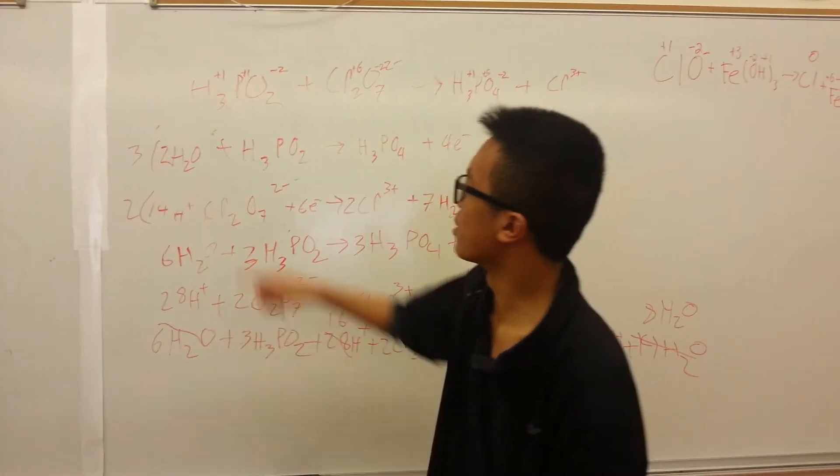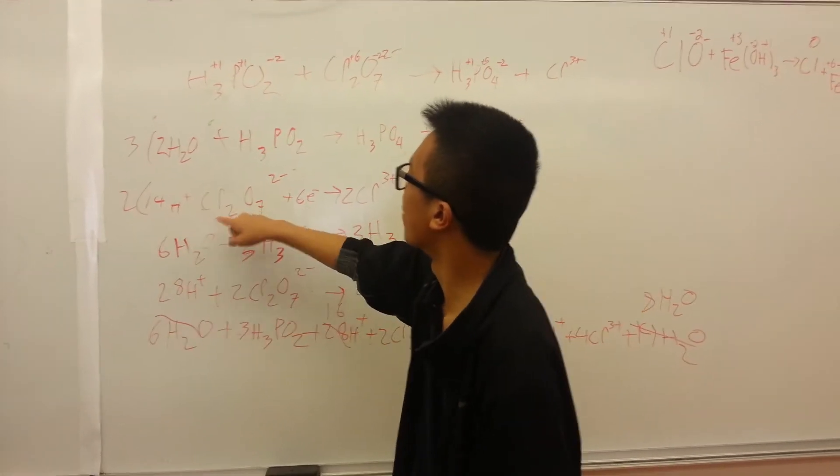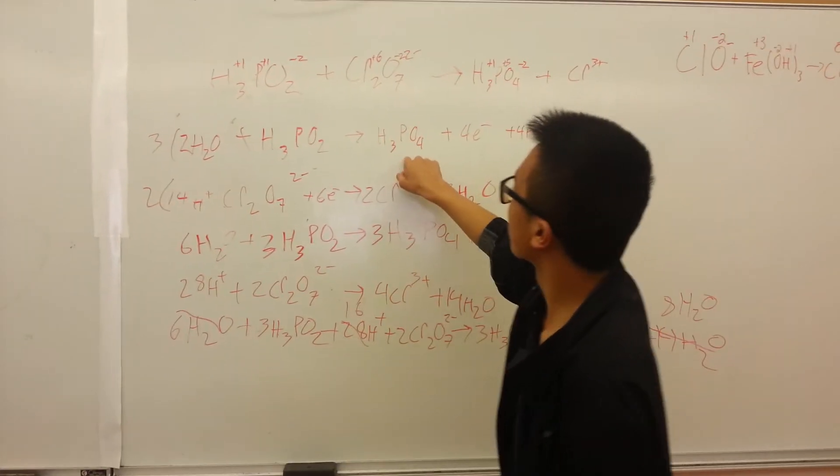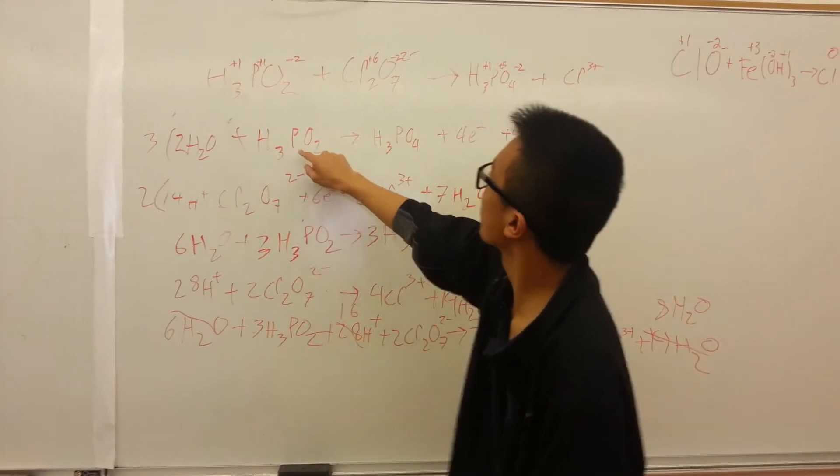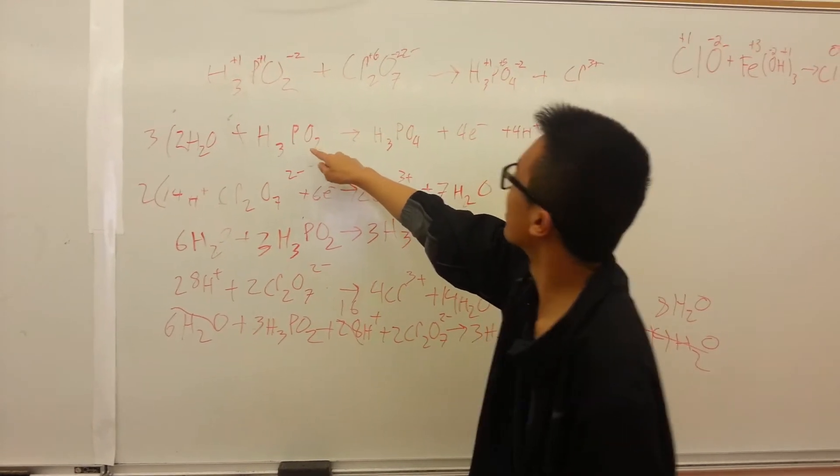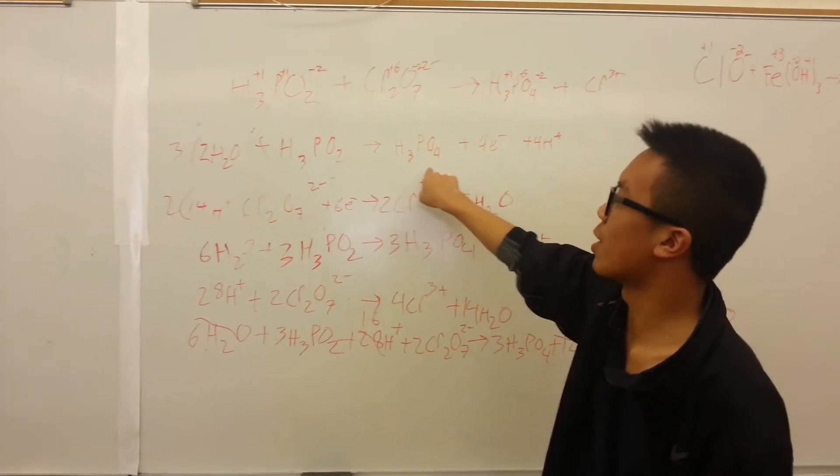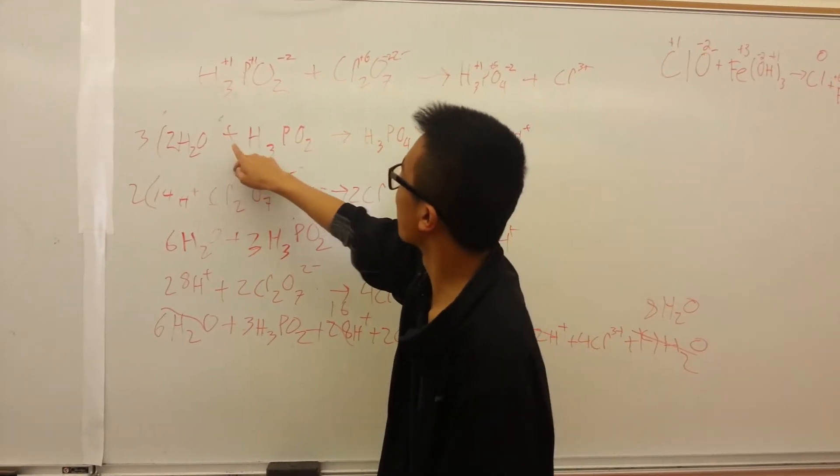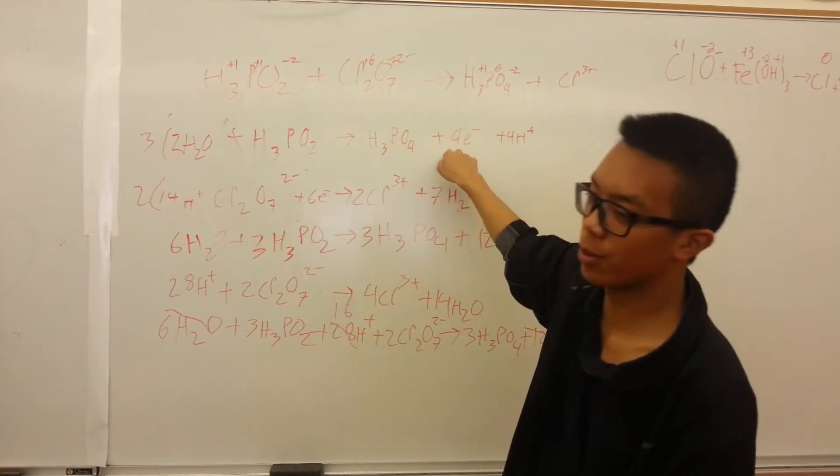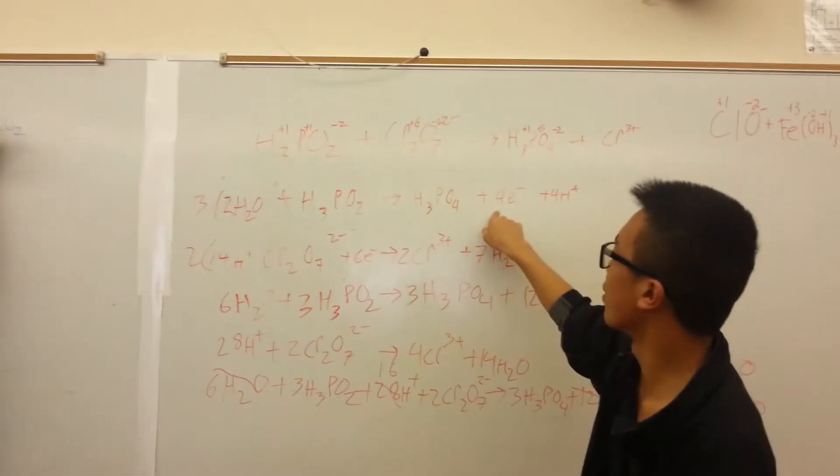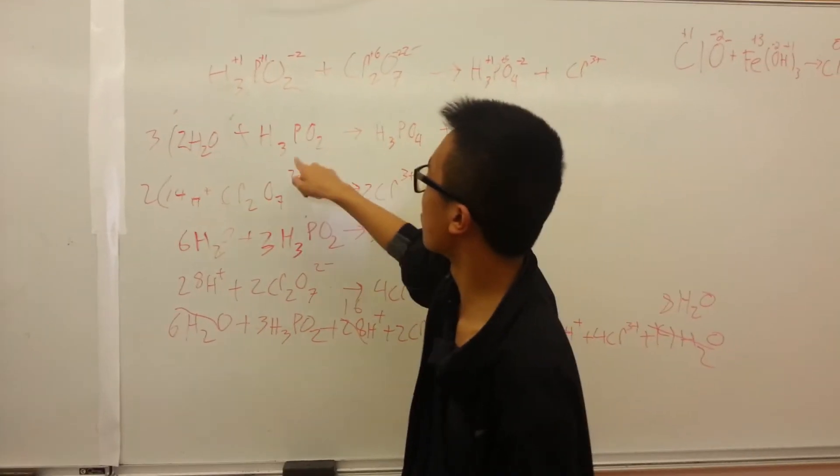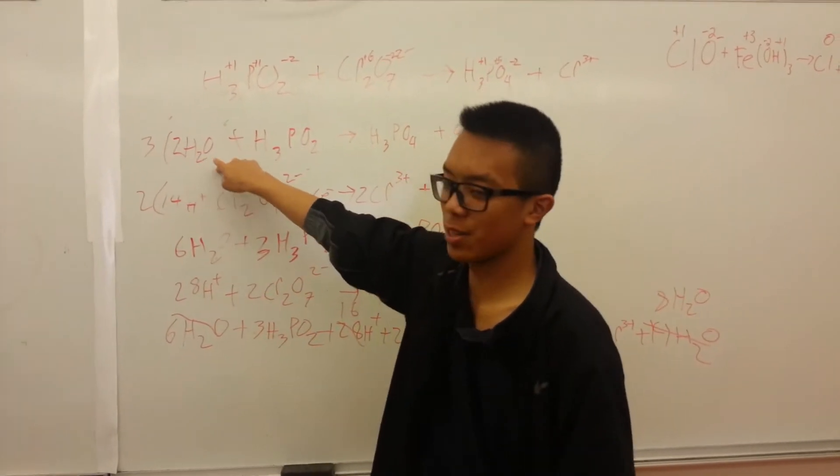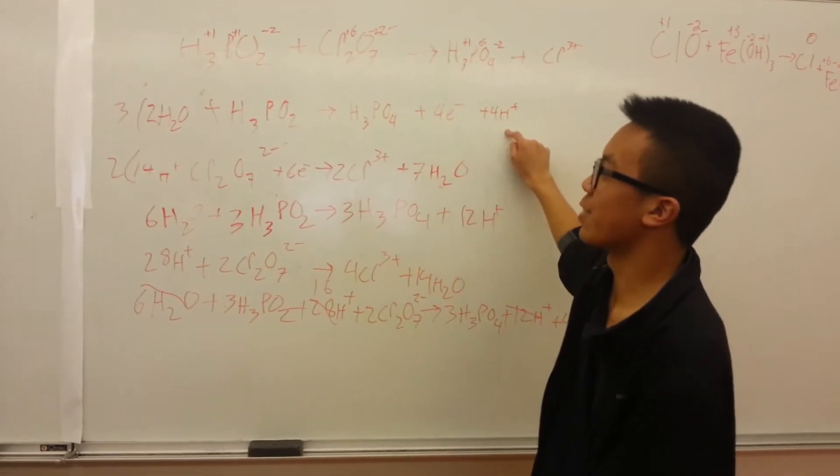Now what we did here is we did the half-reaction for each of them. For H3PO2 equals H3PO4, the P gets more positive, so it's losing electrons. We added 4 electrons. Then we had to balance the oxygens on this side, so we added water, and to balance out the hydrogens on this side, we had to add hydrogens here.